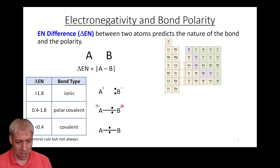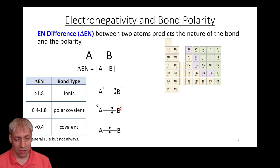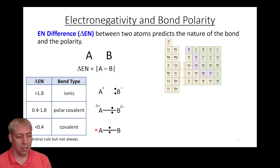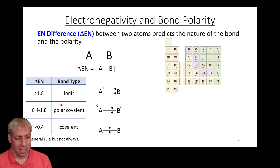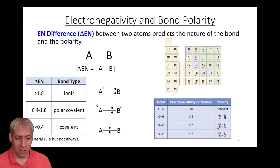You see this lowercase delta notation — partial negative on the more electronegative side, partial positive on the other — it's stealing that electron density away from A. Note this is just a general rule; these are blurry, somewhat arbitrary lines. Generally, the smaller the electronegativity difference, the more covalent the bond; the more extreme the difference, the more ionic it is, with polar covalent somewhere in between.